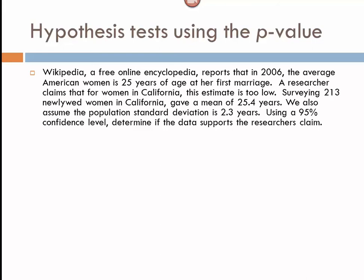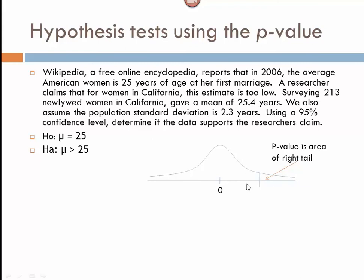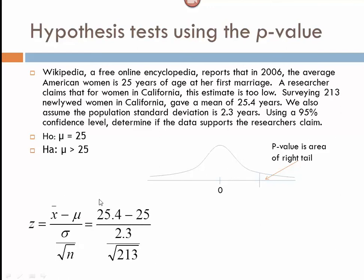For our hypotheses, the null is that the mean age for women is 25 years. The researcher believes this is too low, so the alternative is that mu is greater than 25 years. We set up our normal curve. Using our test statistic formula, we plug in x-bar of 25.4, minus 25, divided by 2.3 over the square root of 213, remembering parentheses around the top and denominator, and we get a test statistic of 2.54.